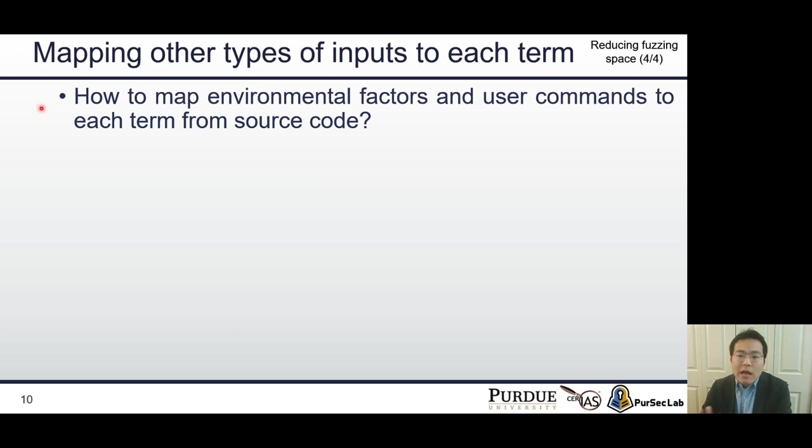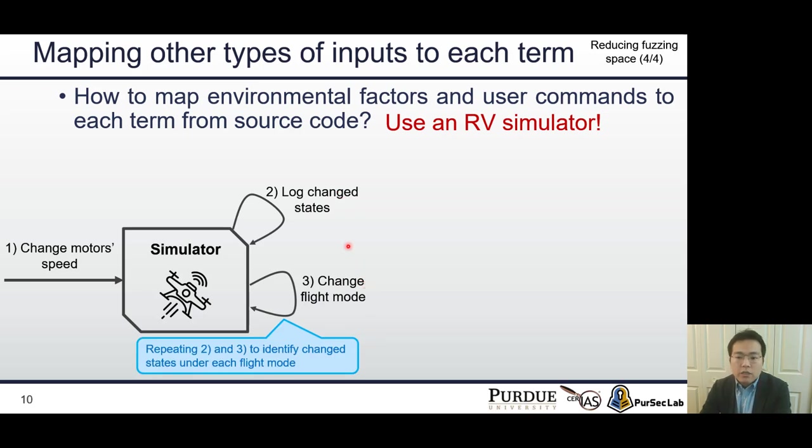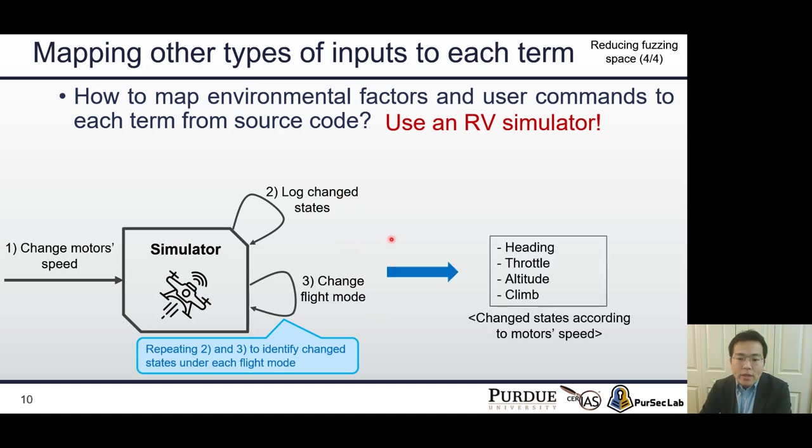But there are other two different types of input: environment vectors and user command. How can we map wind effect to the RV's physical state from source code? The answer is that we can use high-fidelity RV simulator. For example, let's assume that we want to know which states are affected by motor speed. First, we change motor speed on our RV simulator. Second, we measure changed state. Third, we change the current fly mode to another mode because RVs behave differently according to each fly mode. We repeat steps 2 and 3 to test motor speed on all fly modes. As a result, we can notice that changed motor speed affects the RV's heading angle, altitude, throttle, and climb angle.